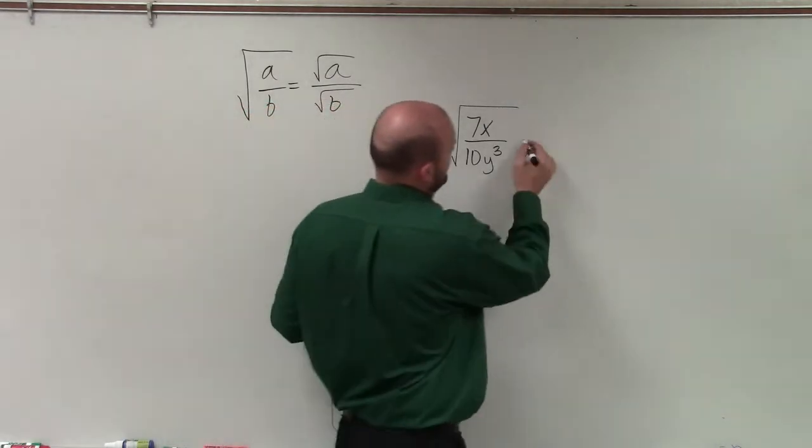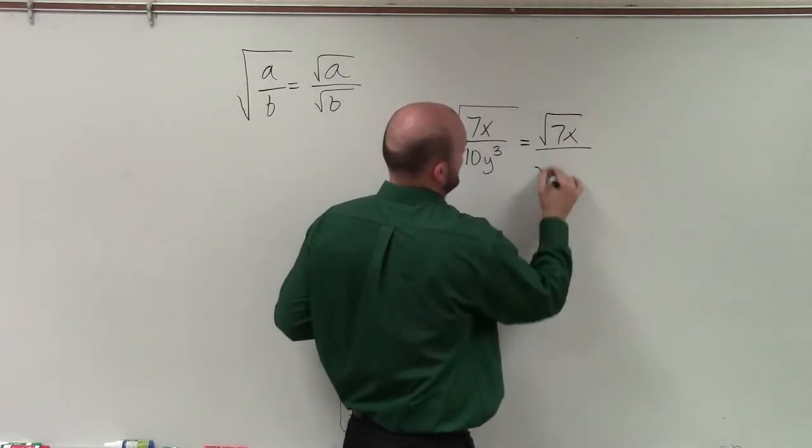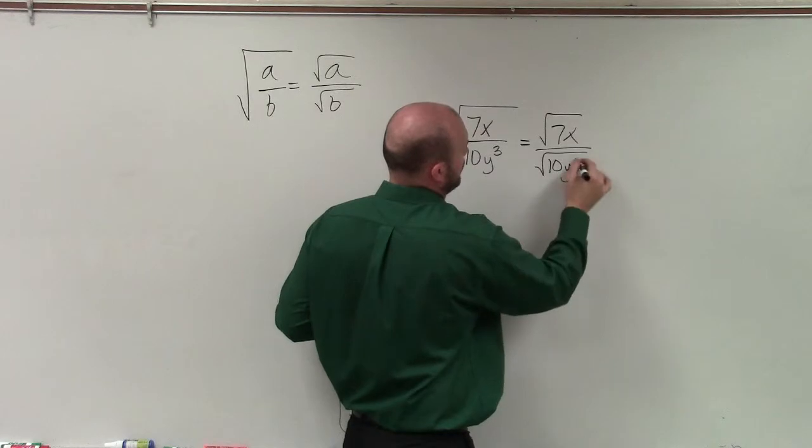So therefore, a lot of times this helps us to rewrite this. So therefore, I can rewrite this as the square root of 7x divided by the square root of 10y cubed.